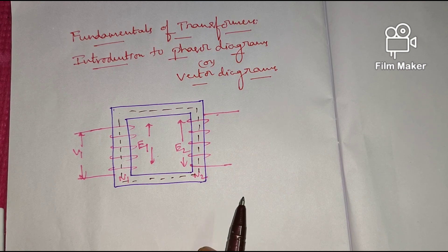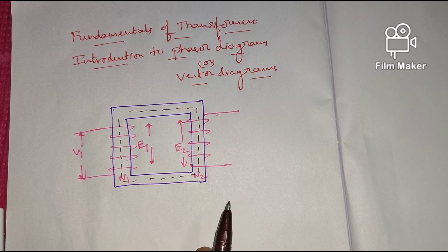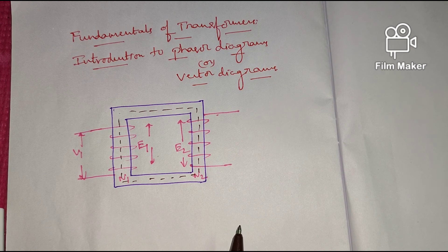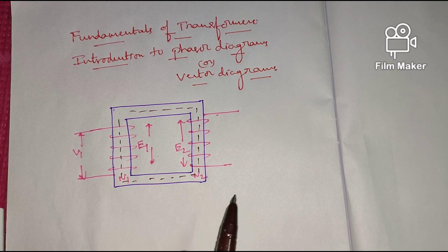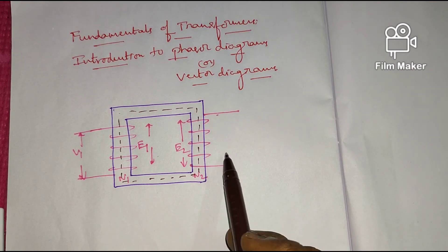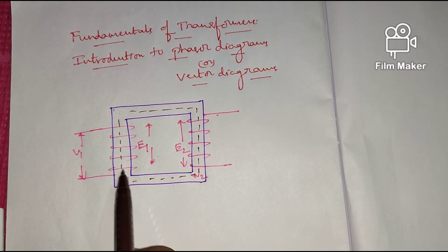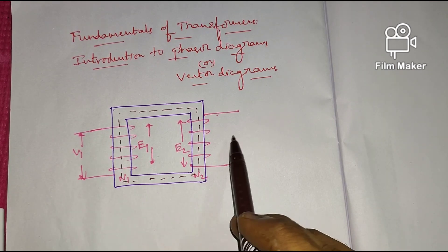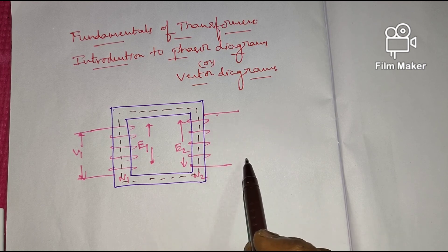Now let me briefly explain the working principle of a transformer and also its EMF equation. A transformer works on Faraday's laws of electromagnetic induction — basically that is statically induced EMF. Here we have got primary winding and secondary winding. Generally, primary winding is connected to supply voltage and secondary winding is connected to the load.